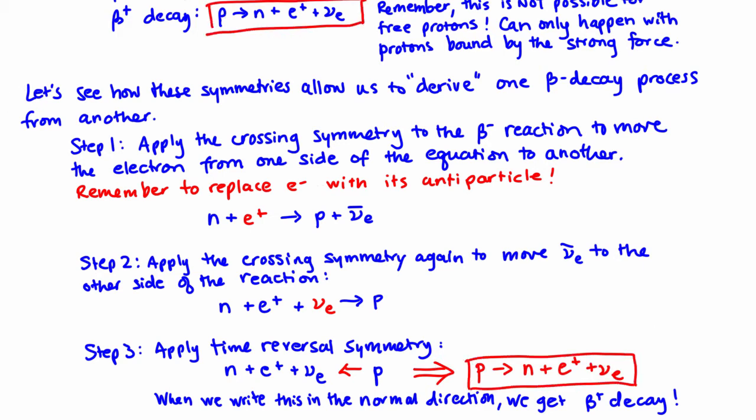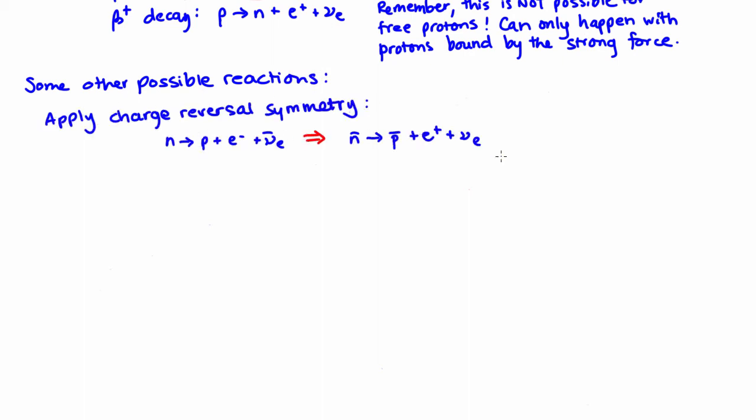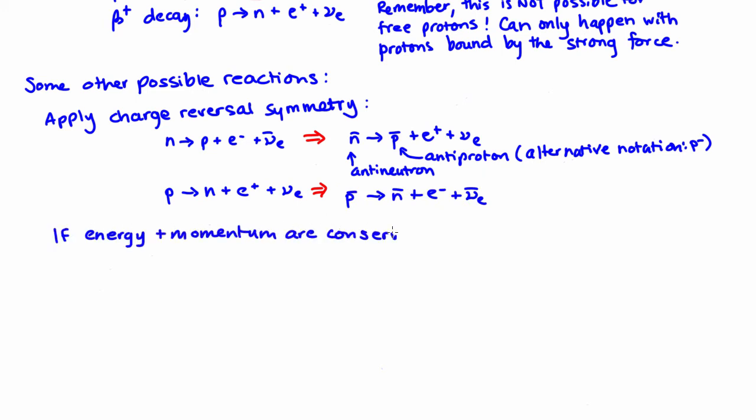Following on the example below, some other possible reactions can be found by just applying both charge conjugation and time reversal symmetry. For example n̄ → p̄ + e⁺ + vₑ, or p̄ → n̄ + e⁻ + v̄ₑ. Both these reactions are also possible to detect as long as energy and momentum are conserved.